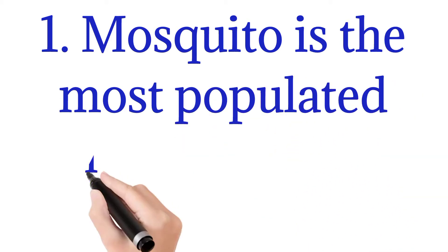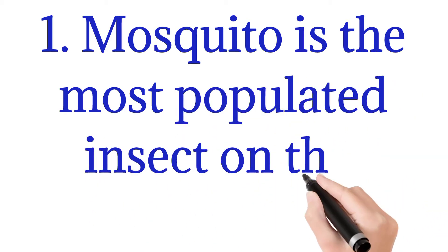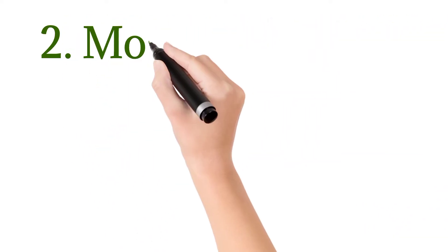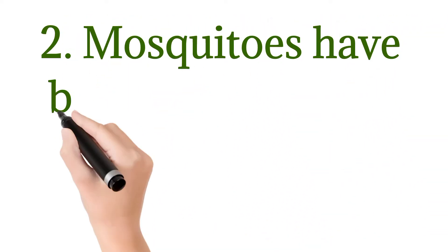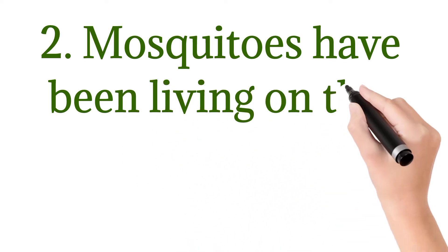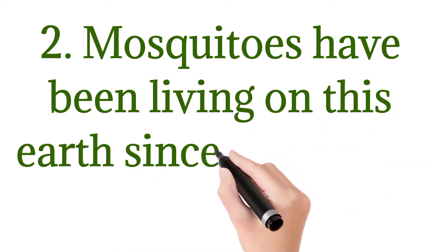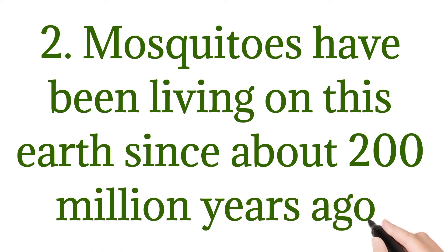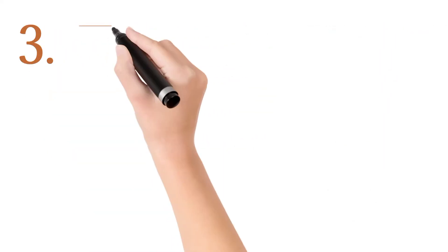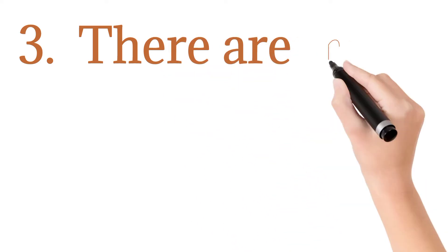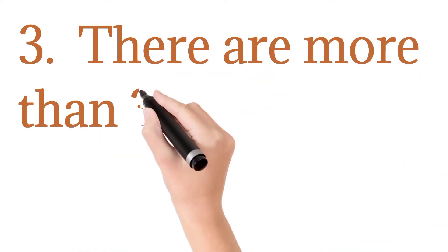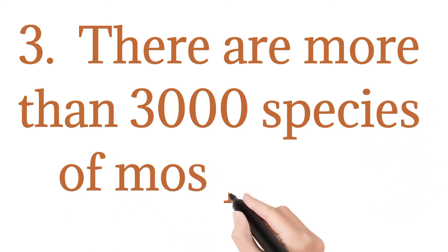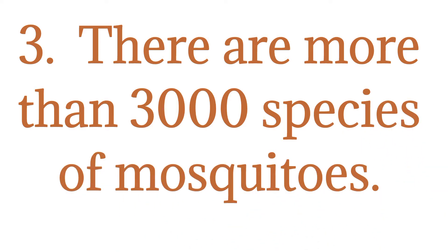Mosquito is the most populated insect on this earth. Mosquitoes have been living on this earth since about 200 million years ago. There are more than 3000 species of mosquitos.